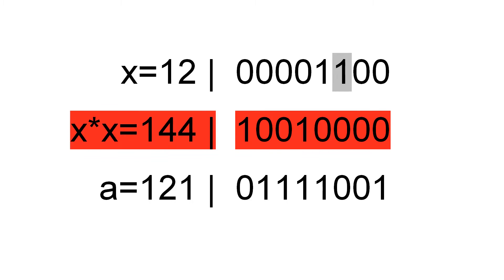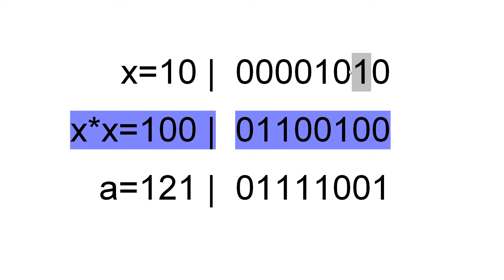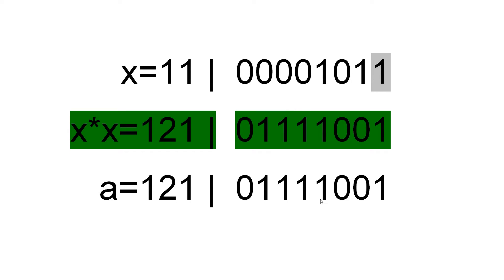We set the next bit and we get 144. 144 is larger than 121, so we don't want this bit and we reset it. We set the next bit — 100 is less than 121 — and we set the next bit and get 121, which is exactly our number a. So the square root of a is 11.